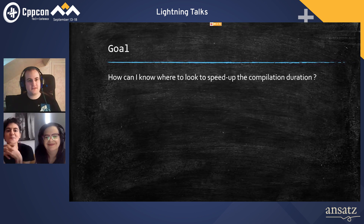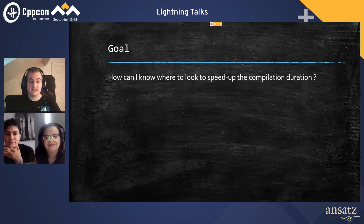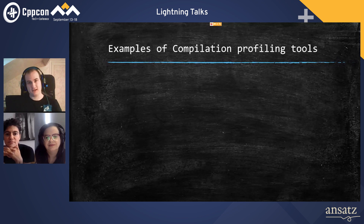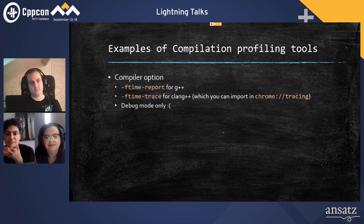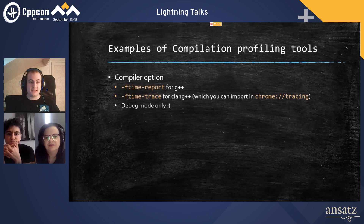So the goal of this talk is to answer the question: how can I know where to look to speed up compilation duration when runtime performance is not that relevant? I pulled out a few tools to help you profile compilation time. First, there are compiler options like -ftime-report for g++ and -ftime-trace for Clang.